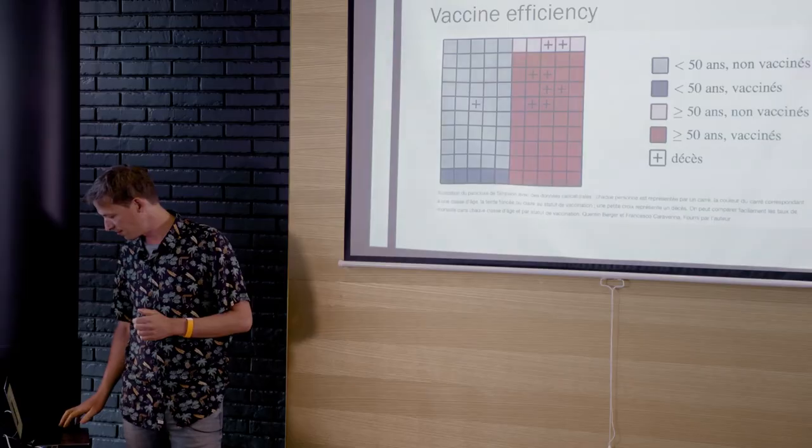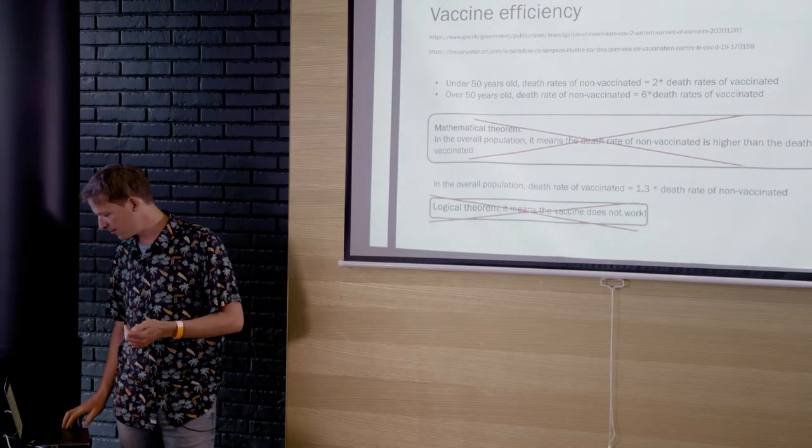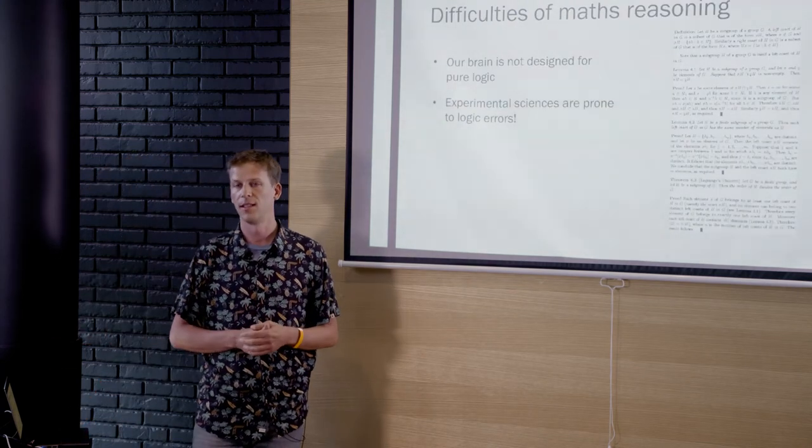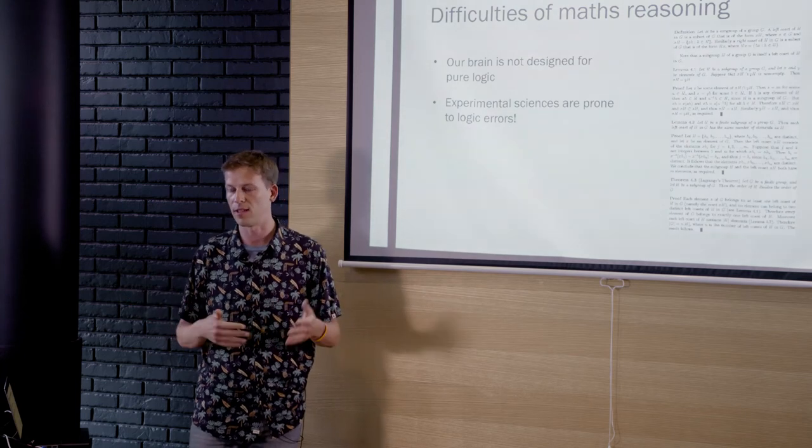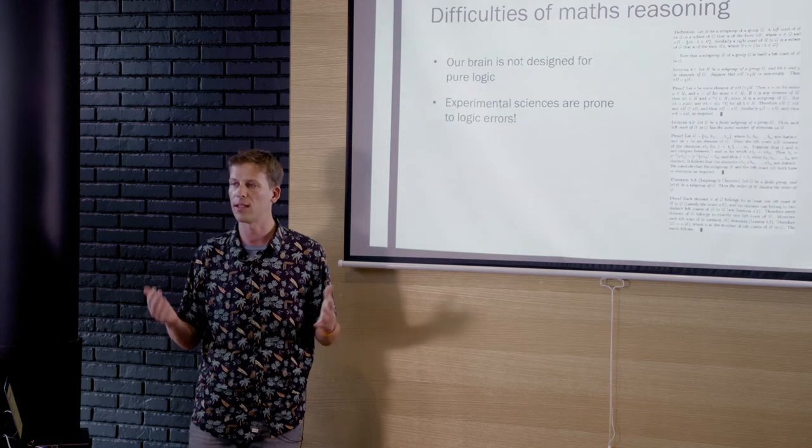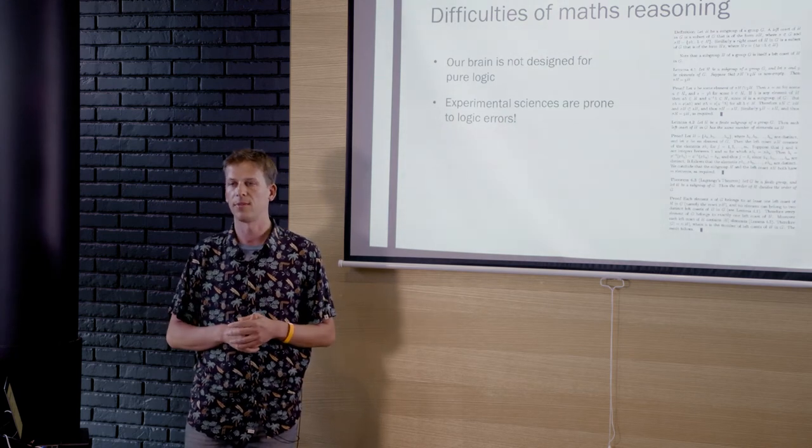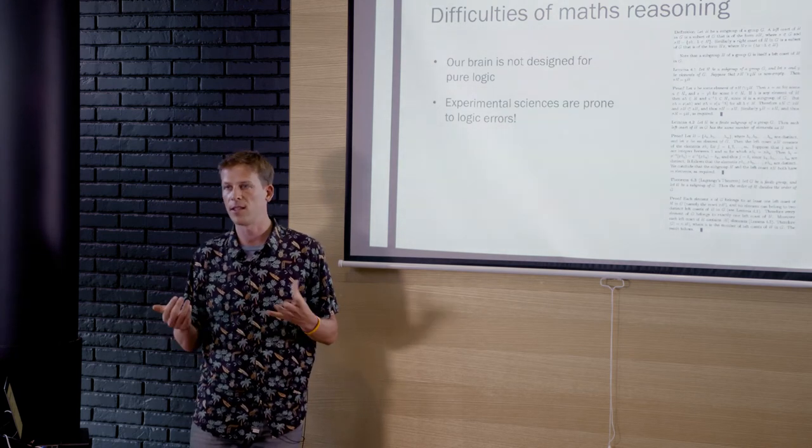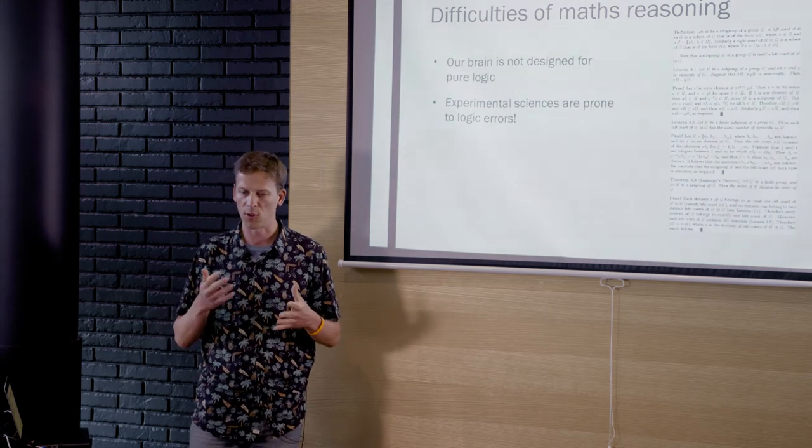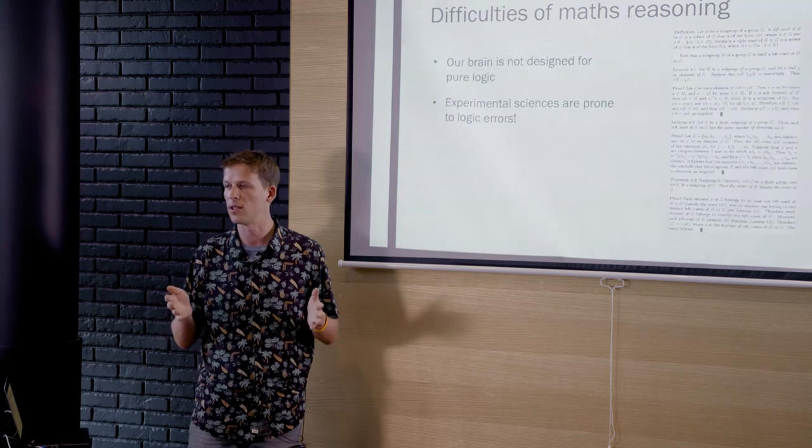So bottom line here is that when you're doing science and when you're doing mathematics, logical reasoning, you have a lot of traps lying everywhere, logical traps. And the job of a scientist and mathematician is to try not to fall inside the trap. And okay, for mathematicians, this is actually what we learn at university, not to fall into traps and trying to make very rigorous reasoning and stuff.